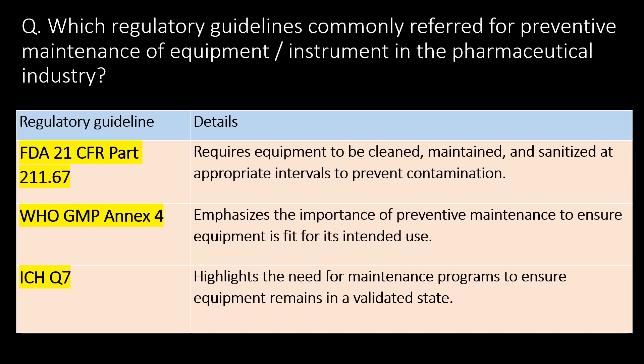One more very important question: which regulatory guidelines are commonly referred to for preventive maintenance of equipment or instruments in the pharma industry? FDA 21 CFR Part 211.67, WHO GMP Annex 4, and ICH Q7 are the guidelines most commonly referred to for preventive maintenance of equipment or instruments in the pharmaceutical industry.